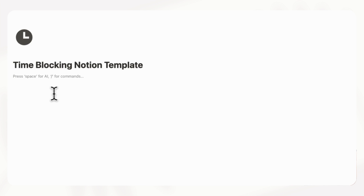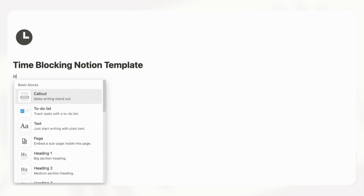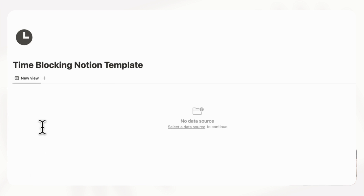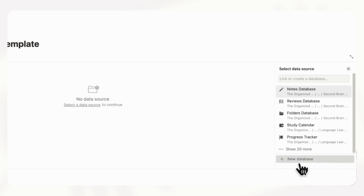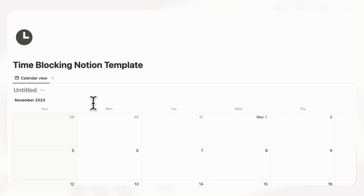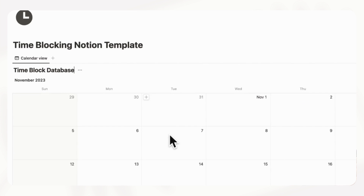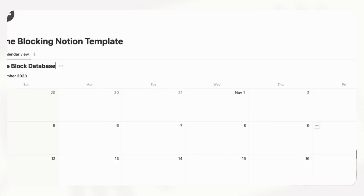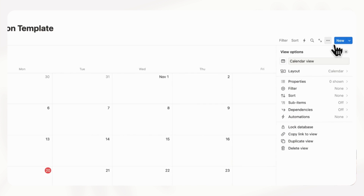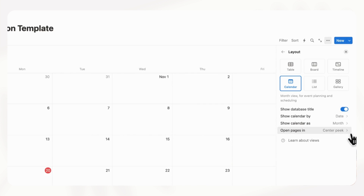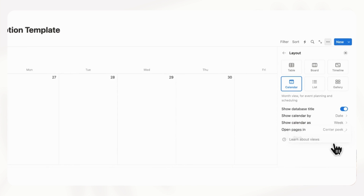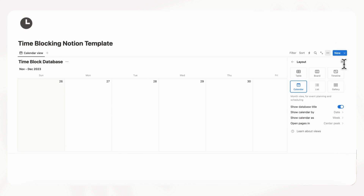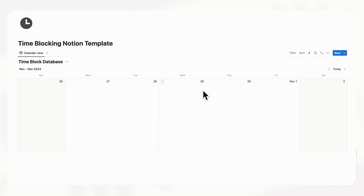First let's go with a calendar view by typing slash calendar, then do plus new database. We're going to call this database 'Time Block Database'. As you can see now it's in a month view, so we can go to the three dots here and then adjust the layout so that it's in week view. And now we can start our time blocking.